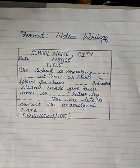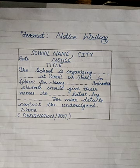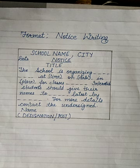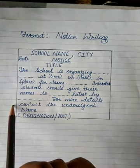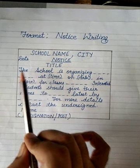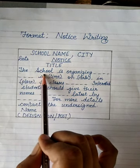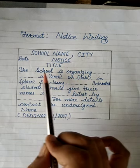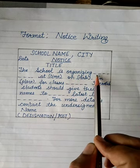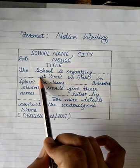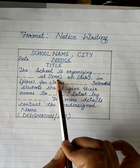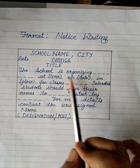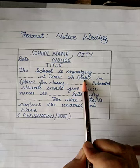In the next line, you will write the title — the name of the competition. For example, if it's a singing competition or a dance competition, you write the name of that competition. Then the body of your notice starts: 'The SCHOOL is organizing...' — write the name of the competition. Then write: at — what time it will start; on — the date on which it will be held.